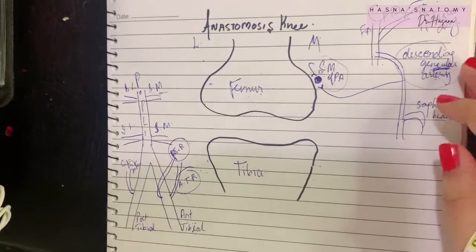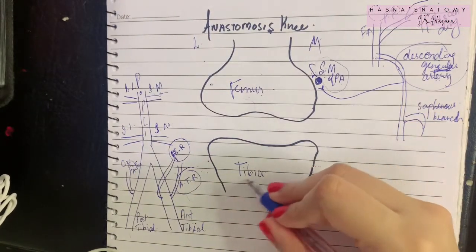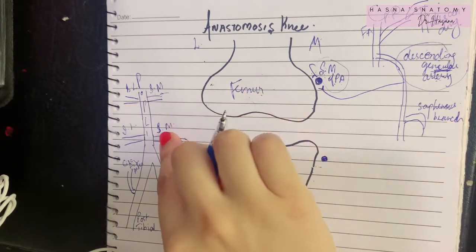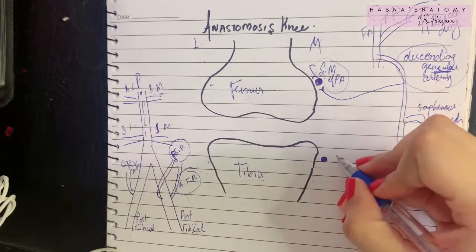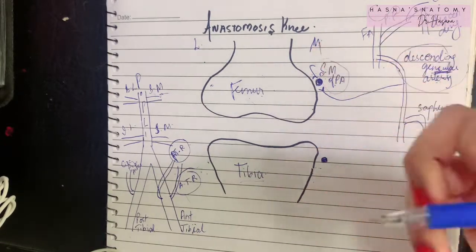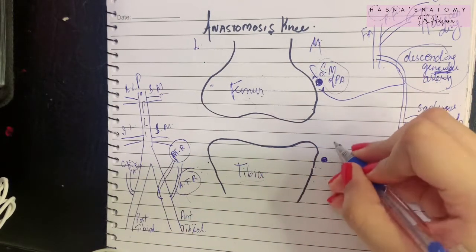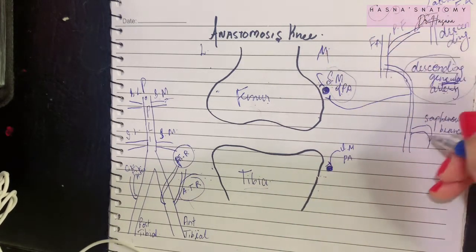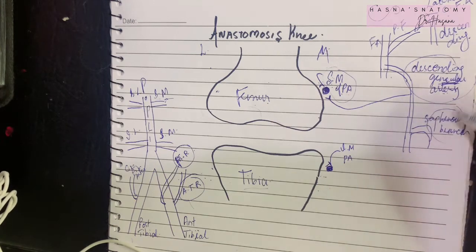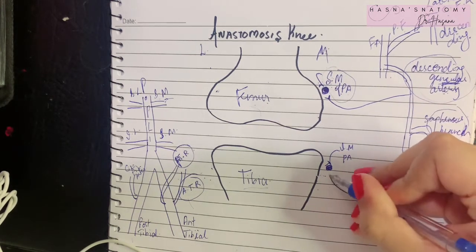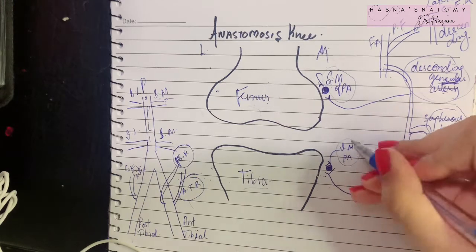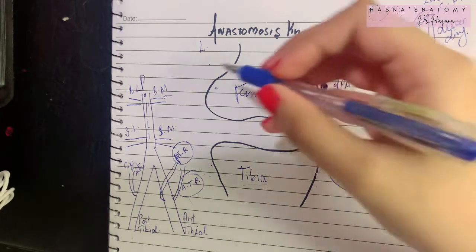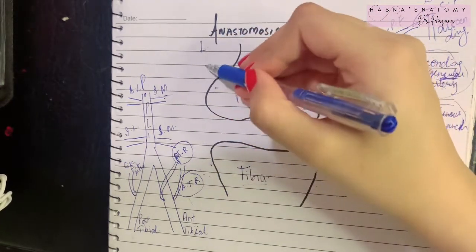Below the medial condyle of the tibia, the anastomosis takes place between the inferior medial genicular branch of the popliteal artery and, coming from above, the saphenous branch of the descending genicular artery. These two anastomose below the medial condyle of the tibia.